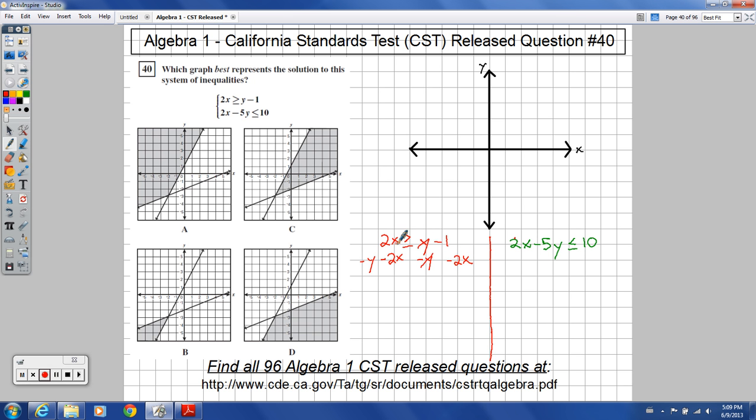That will get this to cancel here and here and there and there. This would leave me with negative y is greater than or equal to negative 2x minus 1.